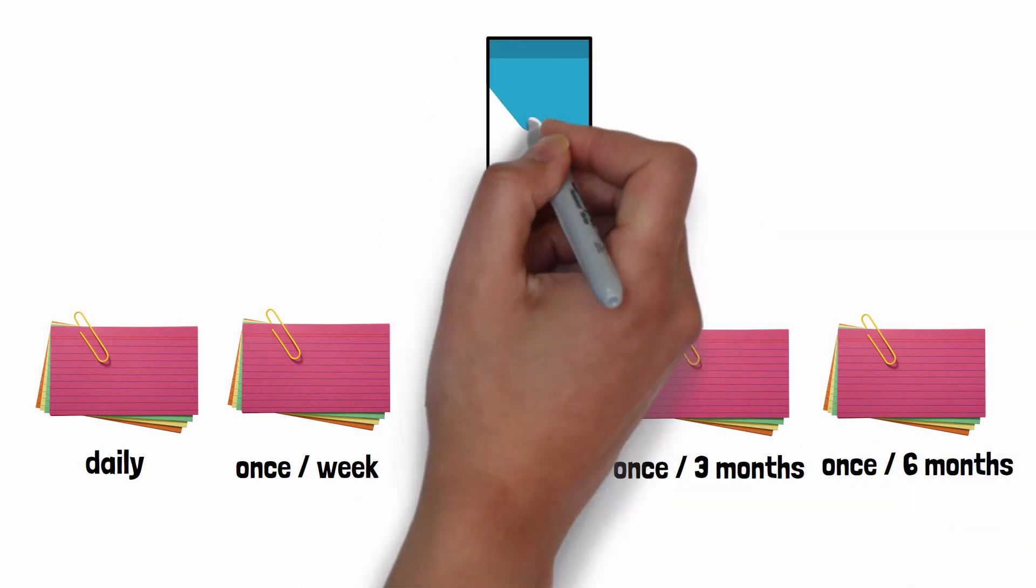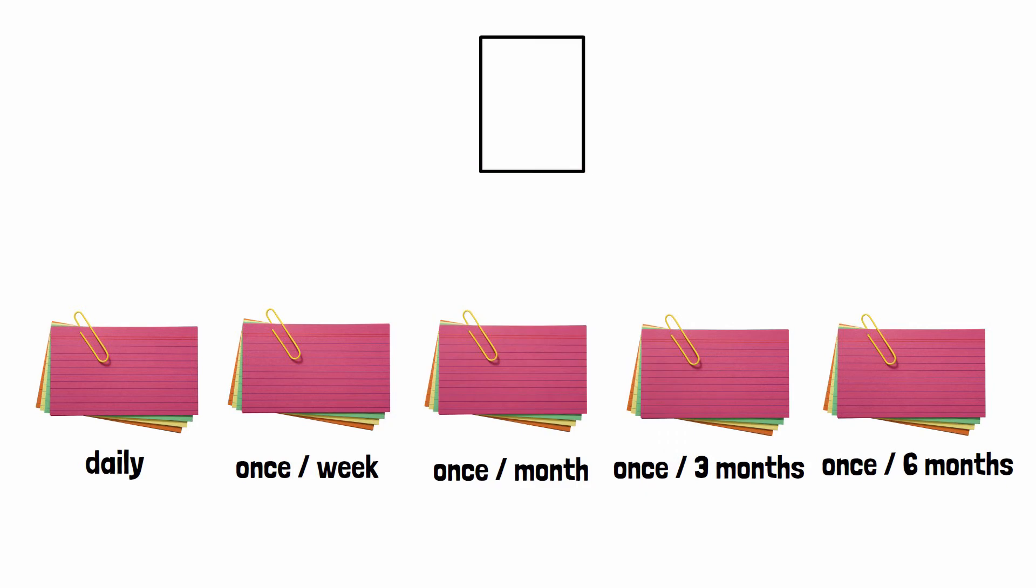As soon as you design a specific card, you put it in the daily grouping. Then you revise it the next day. If you find that the information is coming back to you easily, you move the card to once a week grouping. Then you revise it again after one week.